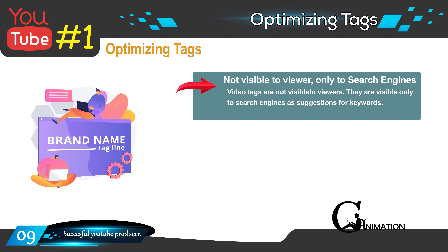Search engines consider tags as suggestions for ranking. So if you're targeting a certain tag, the search engine will understand that you want to be ranked for it, and based on your video stats and other factors, YouTube will rank your video so you can reach out to more people.